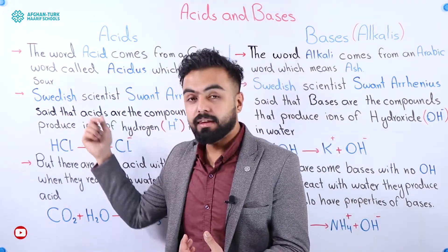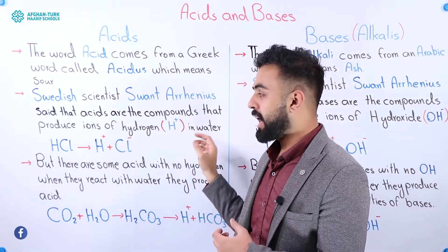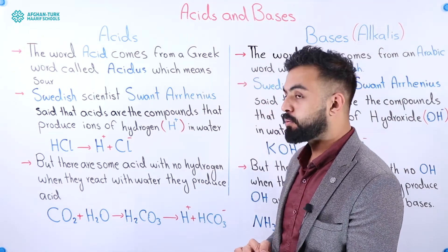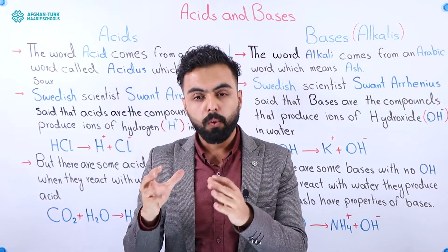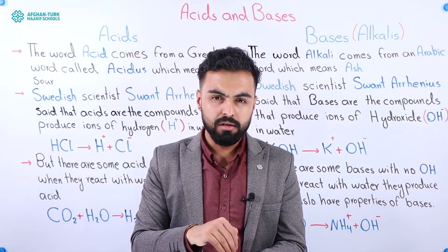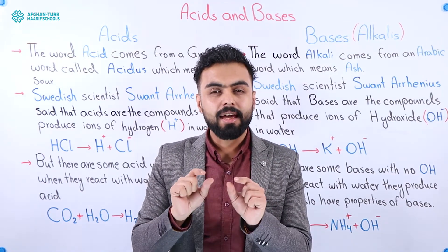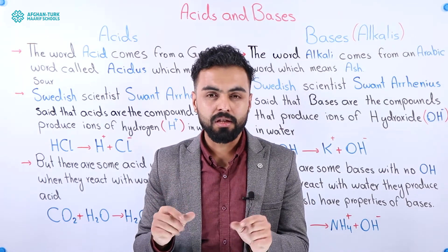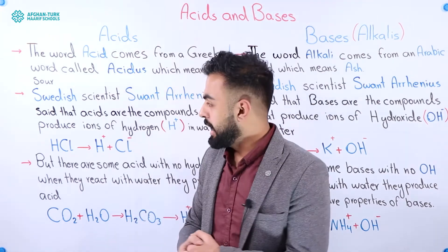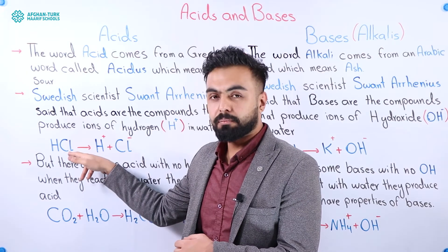A Swedish scientist called Svante Arrhenius gave a definition of acids. He said that acids are the compounds that produce ions of hydrogen in water. So when we dissolve a compound in water, if that compound produces ions of hydrogen, then that compound is called an acid.